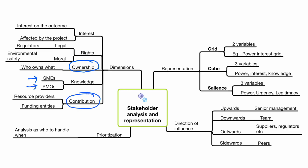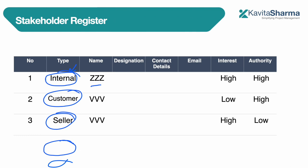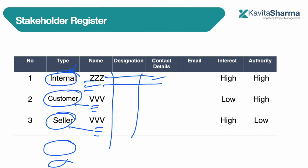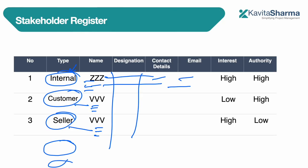We don't write stakeholders in categories — we write names. Type of stakeholders: company, customer, seller, users — and for those people we write names, contact details, email IDs. You should know all this. After that, we need to know how much information each stakeholder wants to know about the project.